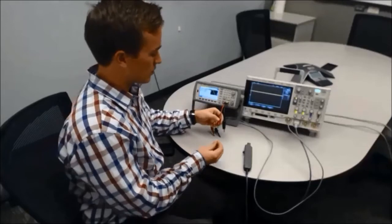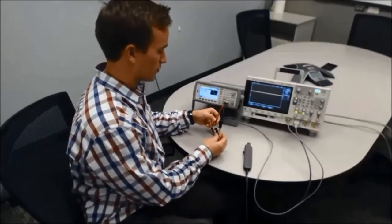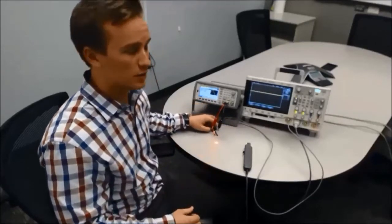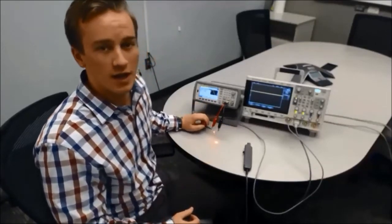To begin, we're going to hook up the diode to the waveform generator. On channel 1 of the oscilloscope, we're going to measure the voltage across the diode.